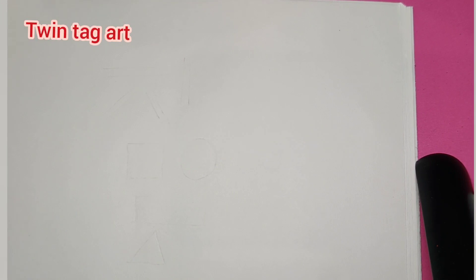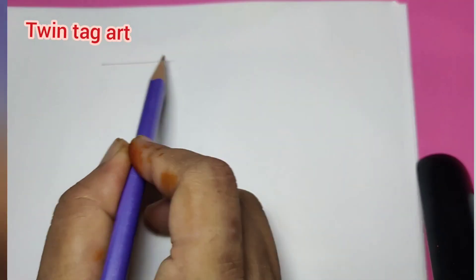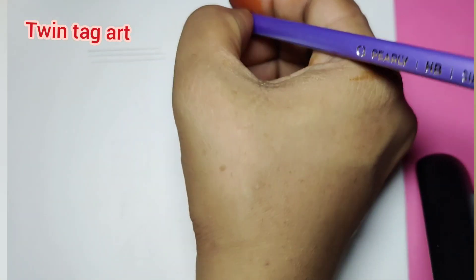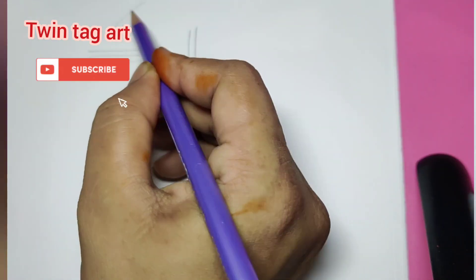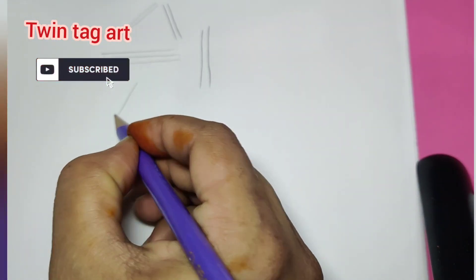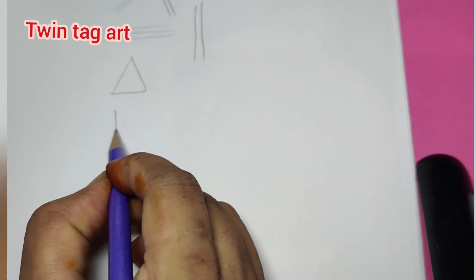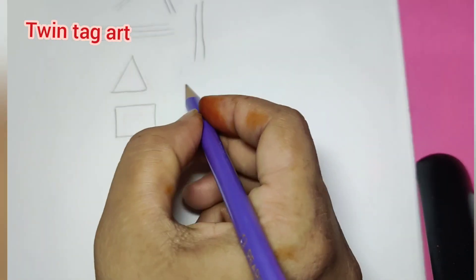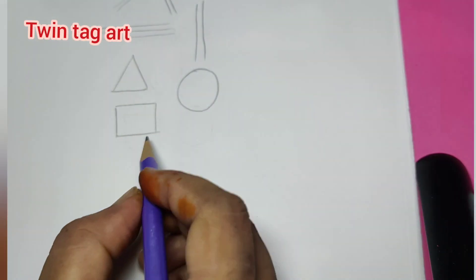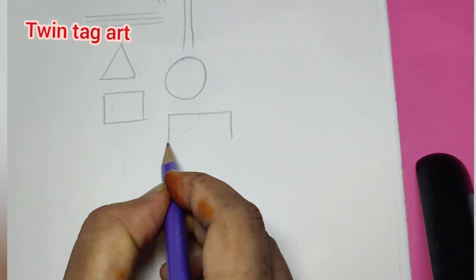As we learned to stroke lines in the last class - horizontal lines, vertical lines, and slanting lines - and we studied different shapes like triangles, square, circle, rectangle. Today we will learn to draw different shapes.